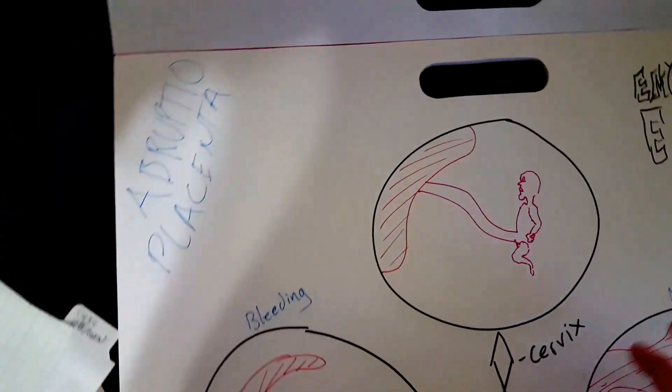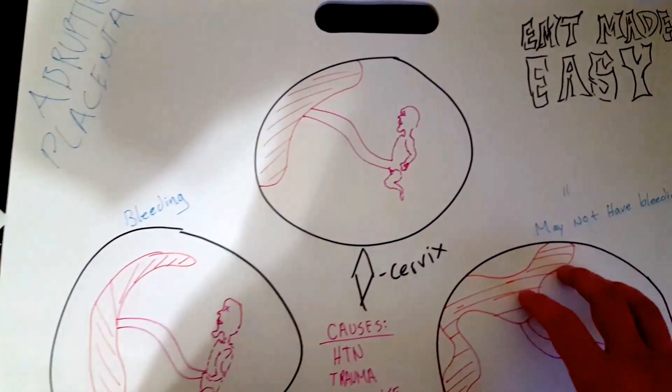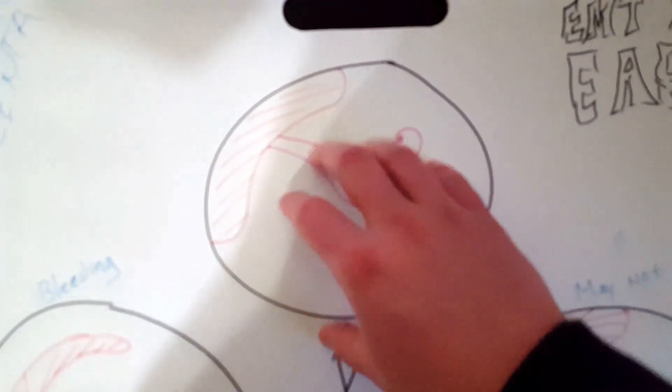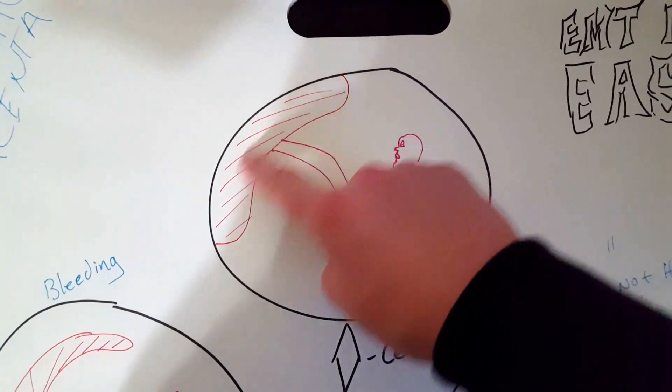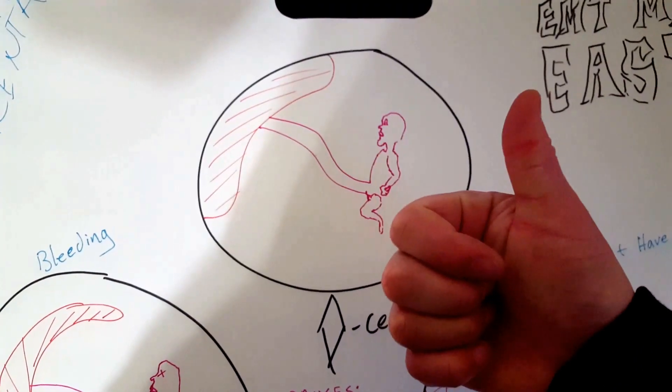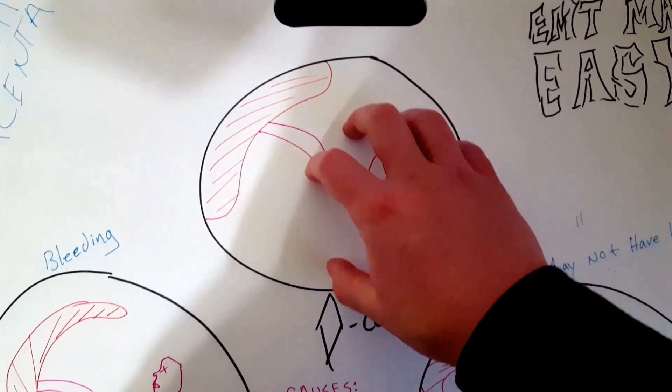So I'm going to go over it one more time, just kind of show you what's good, what's bad and what's worse. So this is a normal baby in the uterus. The placenta will be fully attached to the uterus. Baby is good. They're happy. They're eating and they're alive, right?